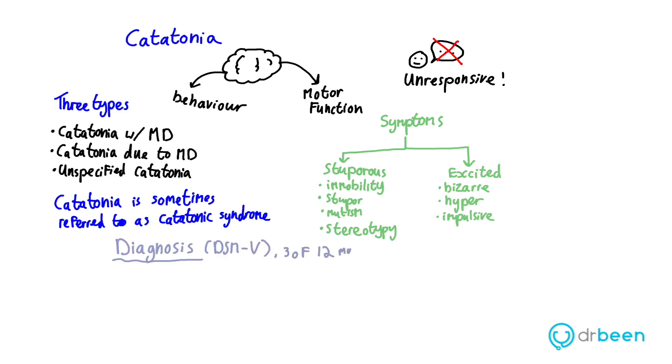So, how do you diagnose this condition? Well, according to DSM-5, at least 3 out of 12 symptoms must be present for a diagnosis of catatonia. These symptoms include stupor, so oblivious inability to move, to respond to stimuli, catalepsy, so rigid body posture, mutism, so little to no verbal contact, waxy flexibility, body remains in whatever position it is placed in.